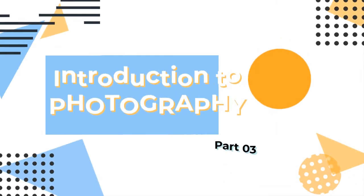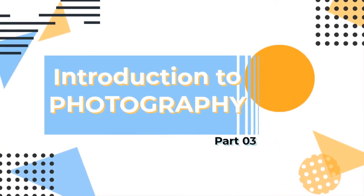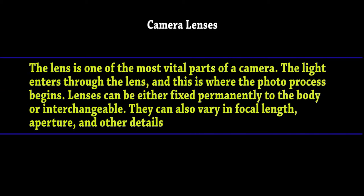The main and most important part of the camera is the lens and types of lenses. The lens is one of the most vital parts of a camera. Light enters through the lens and this is where the photo process begins. Lenses can be either fixed permanently to the body or interchangeable.